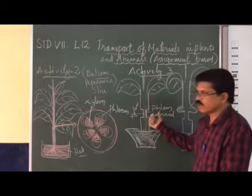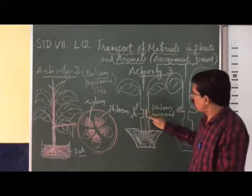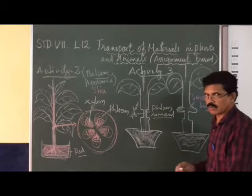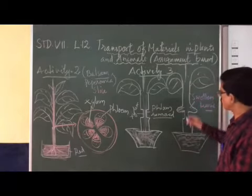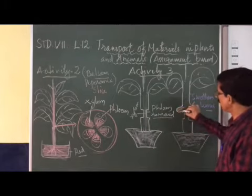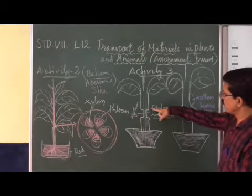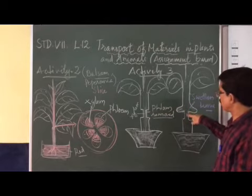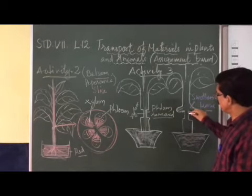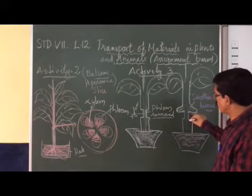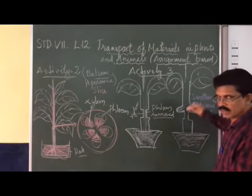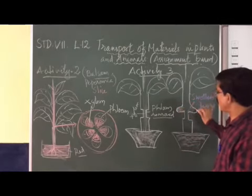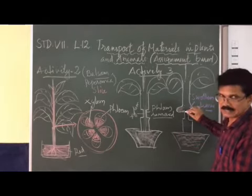After removing the phloem in a circular ring, keep the plant in sunlight for one to two weeks. After that time, you will observe that food accumulates in the upper part of the plant, above the cut. This is because in that region the phloem is removed, so food cannot travel downward.